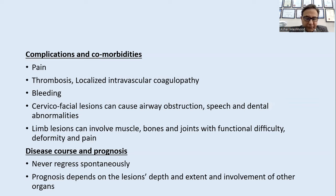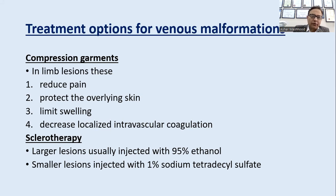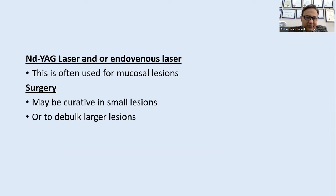Venous malformations never regress spontaneously; prognosis depends on lesion depth, extent, and involvement of other organs. MRI is helpful in showing extent of lesion; CT scan delineates phleboliths; Doppler ultrasound confirms low flow. Treatment options: compression garments for limb lesions reduce pain and limit swelling; sclerotherapy with 59–95% ethanol for larger lesions; small lesions injected with 1% sodium tetradecyl sulfate; Nd:YAG or endovenous lasers mainly for mucosal lesions; surgery may be curative for small lesions or debulking for large lesions.